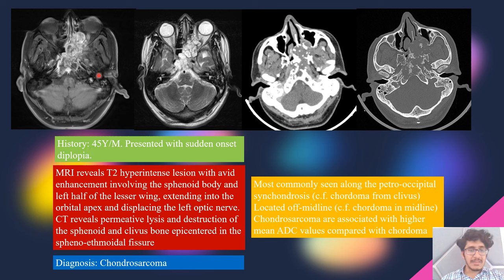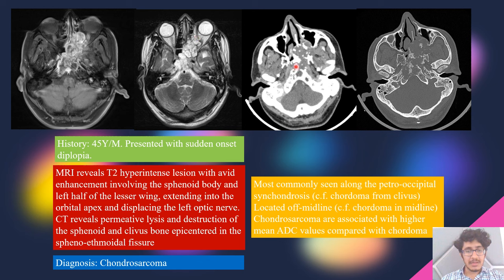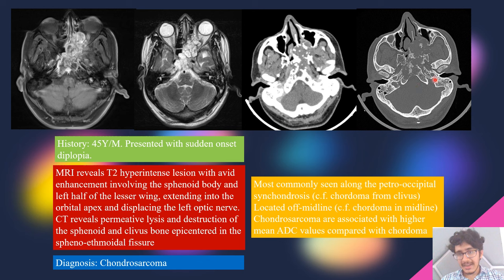A 45-year-old man presented with sudden onset diplopia. MRI showed a T2 hyperintense lesion with avid enhancement involving the sphenoid bone and left half of the lesser wing, with extension into the orbital apex and displacement of the left optic nerve. CT revealed permeative lysis and destruction of the sphenoid and clivus bone, epicentered in the sphenoid pterygoid fissure. This was chondrosarcoma. Its counterpart, chordoma, can be differentiated as chordoma is midline and involves the clivus, while chondrosarcoma is off-midline and typically has higher ADC values.